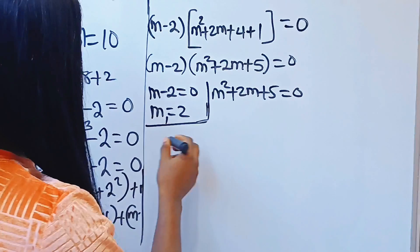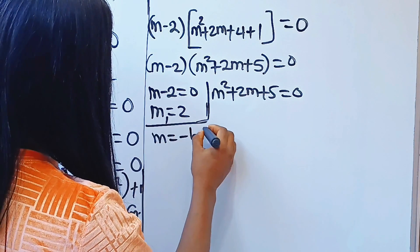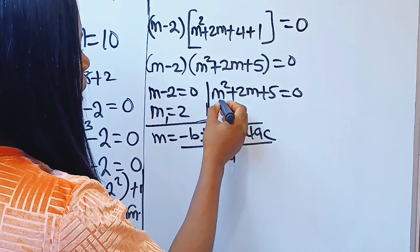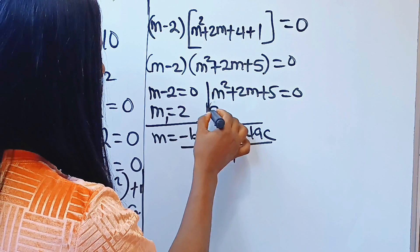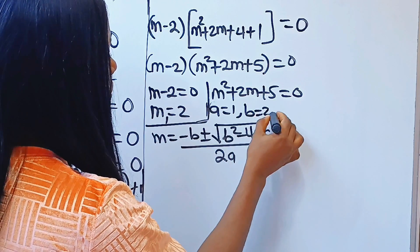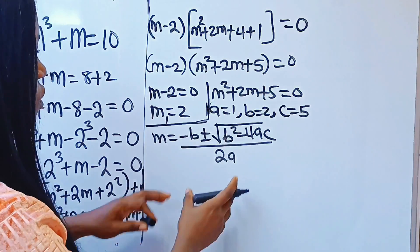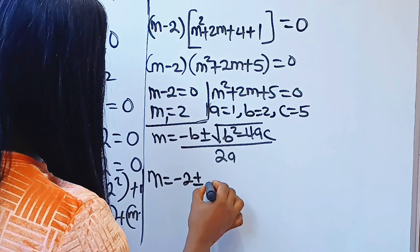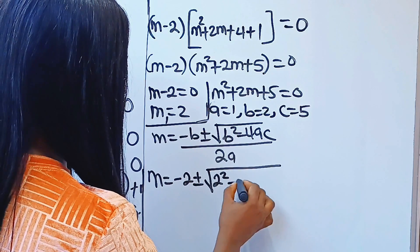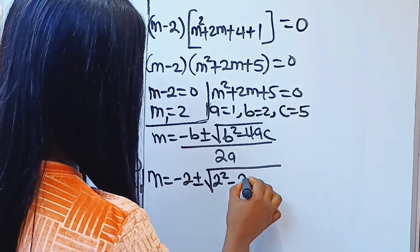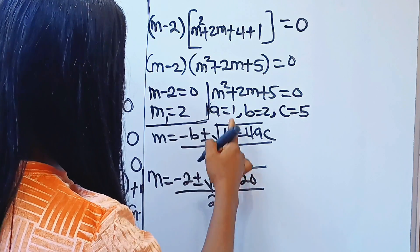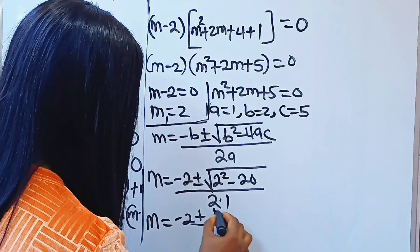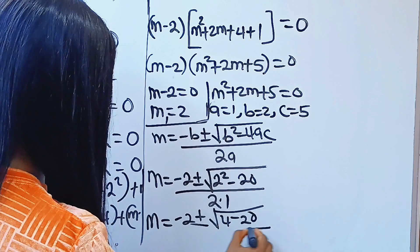We are going to use the quadratic equation formula to solve this. The quadratic formula states that m equals minus b plus or minus square root of b squared minus 4ac, everything divided by 2a. Here our a is the coefficient of m squared, which is 1. Our b is the coefficient of m, which is 2, while our c is 5, the constant. Substituting: m equals minus 2, plus or minus the square root of 2 squared minus 4 times 1 times 5, which gives us 4 minus 20, divided by 2.